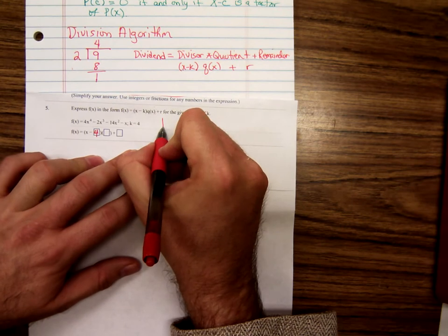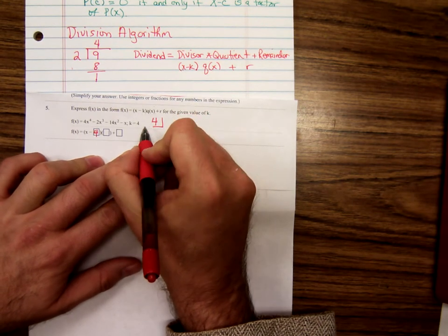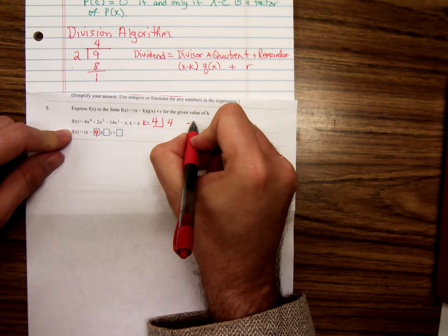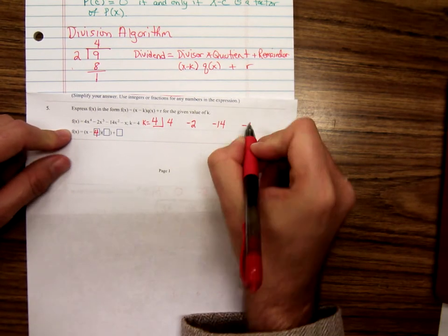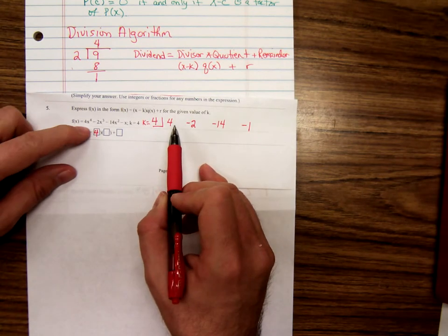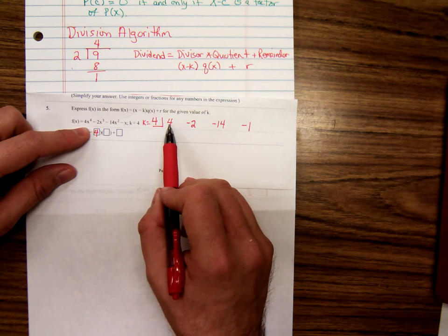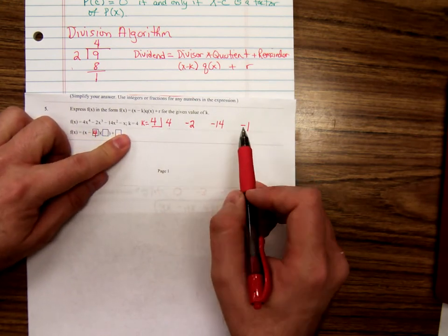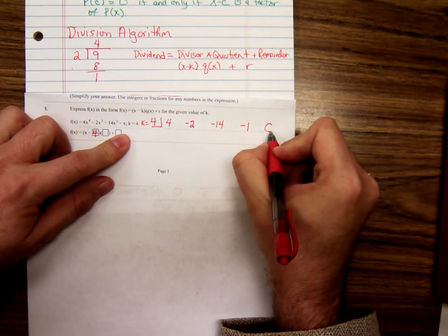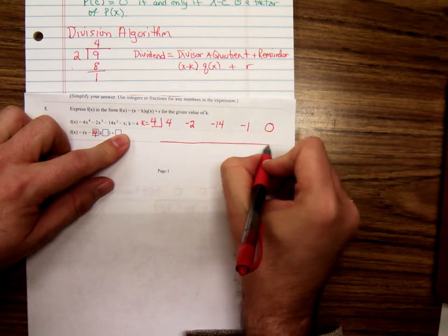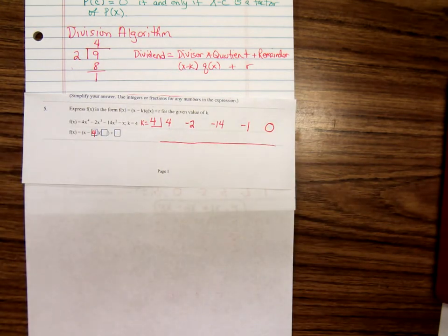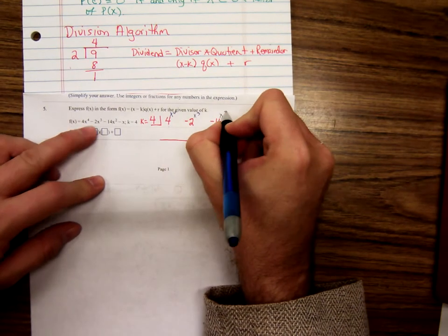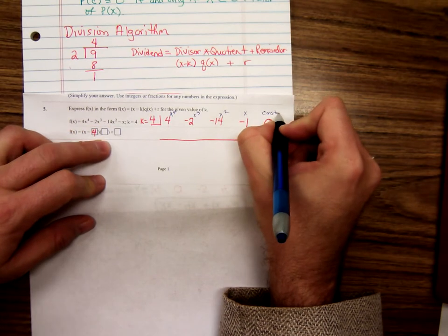And the way we're going to do that is with synthetic division. You write your k and you write the coefficients straight across. Now this is going to be a little tricky because remember, you've got to have, if you start with the x to the fourth, every exponent has to be represented ending with a constant term. x to the fourth, x cubed, x squared, x. There's no constant term here, so we're going to have to put a zero there. Make sure you put the zero to hold the place. This is the x to the fourth, x to the third, x squared, x constant.